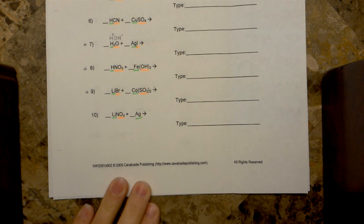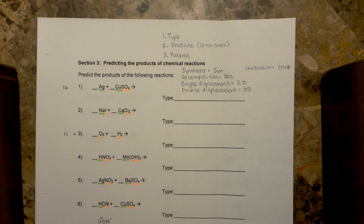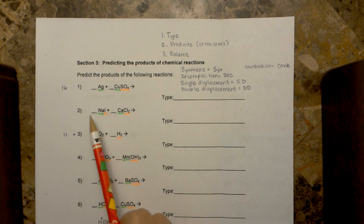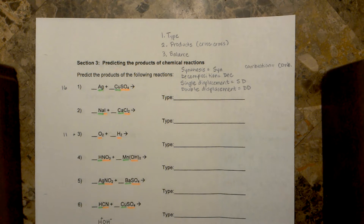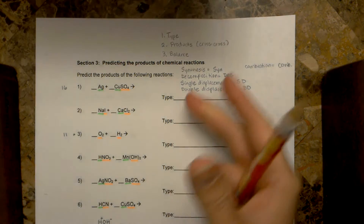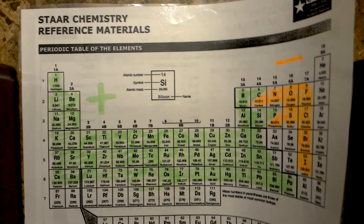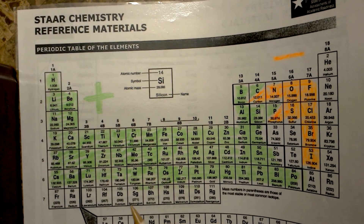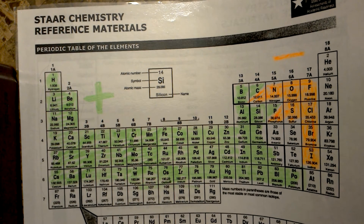This worksheet comes from Cavalcade Publishing, which you can find online. I've color-coded each of these beginning reactions into cations and anions to help better predict how the replacement reactions will happen.